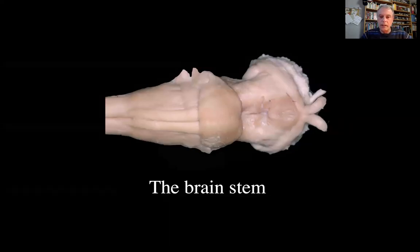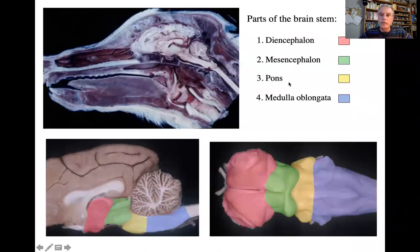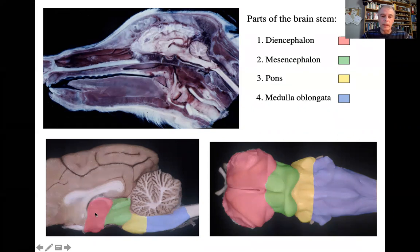This talk is about the brain stem. Here you have a sagittal section of a dog's head where you see the encephalon with the cerebrum, the cerebellum, and the brain stem continuous with the spinal cord. The different parts of the brain stem are marked in colors: in red is the diencephalon, in green the mesencephalon, in yellow the pons, and in blue the medulla oblongata.